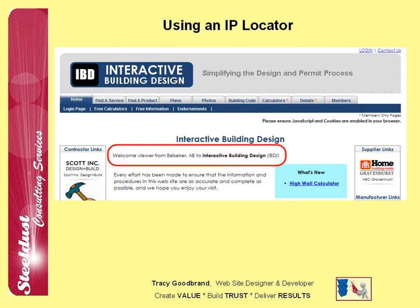On the home page, using an IP locator, I display a welcome statement on the first line listing where a viewer is from. In this case it says, welcome viewer from Bicycle. The location is based on where your ISP, or internet service provider, is located. And obviously this ISP is located close to Bicycle, which is where I'm close to.